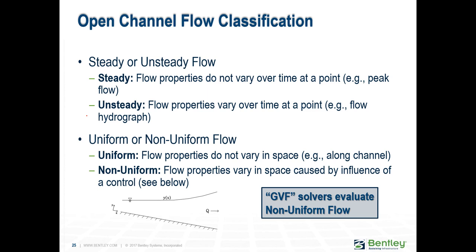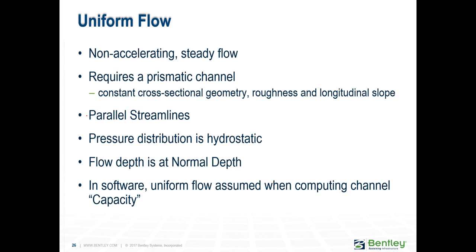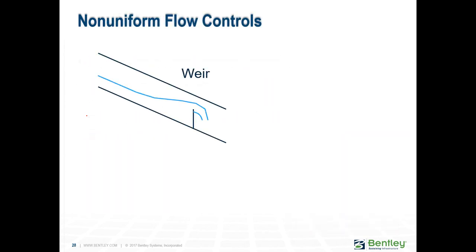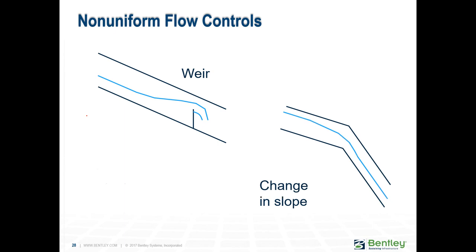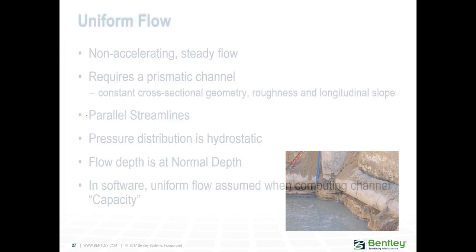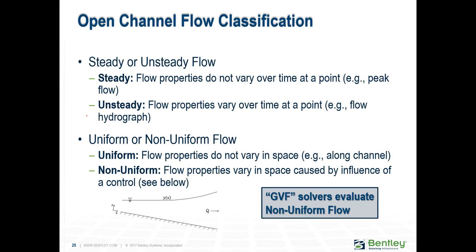Most of the time we do have flow properties changing in space. You can have things like a weir or a change in slope, and all those things would cause your flow to be classified as non-uniform flow. Our solvers obviously evaluate that kind of flow.